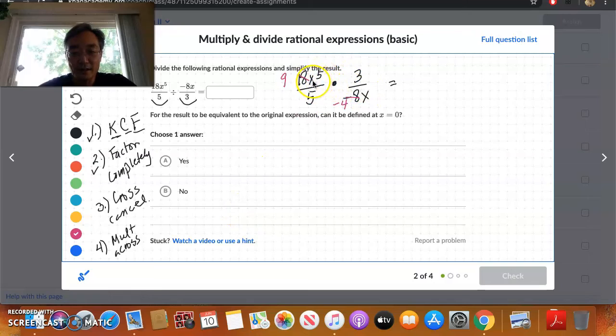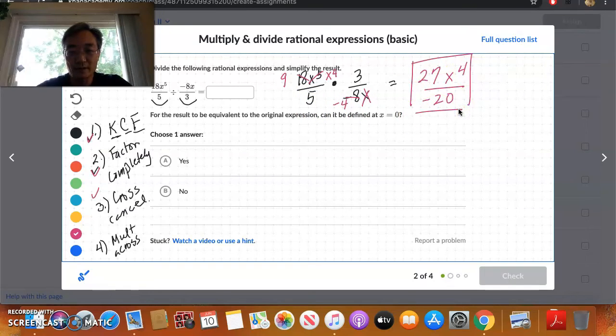And then the x to the 5th, right? This is x to the 5th. This is x. So we're dividing x to the 5th over x, correct? x to the 5th on the top, x on the bottom. When we're dividing powers with the same bases, we subtract their exponents, right? So this is now going to be x to the 4th. And that's going to disappear. This x goes away. And so we have now, we've done this cross-cancelling. So now let's multiply across. So 9 times 3 is 27. We have x to the 4th on the top. And then we have 5 times negative 4 is negative 20. And I believe that is our simplified result.